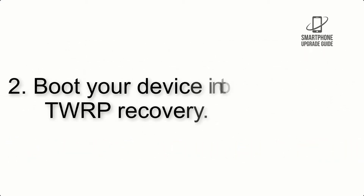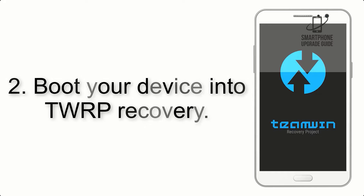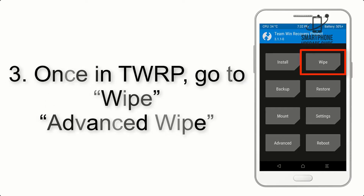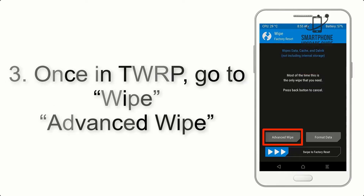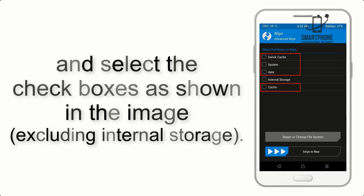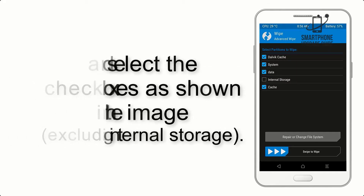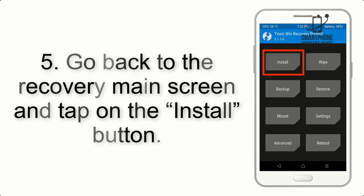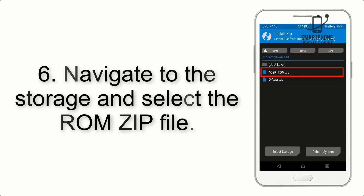Step 2: Boot your device into TWRP recovery. Once in TWRP, click on Advanced and select the checkboxes as shown in the image, excluding internal storage. Step 4: Swipe the button to wipe the device. Step 5: Go back to the recovery main screen and tap on the Install button.